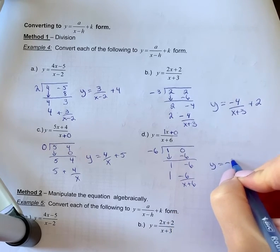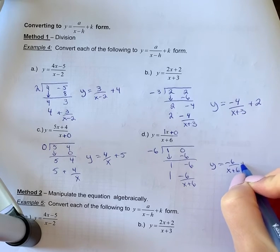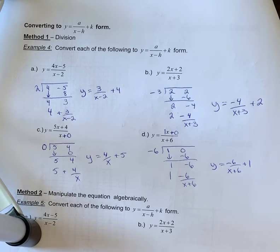So you're going to get y equals negative 6 over x plus 6 plus 1 as your equation in a over x minus h plus k form.